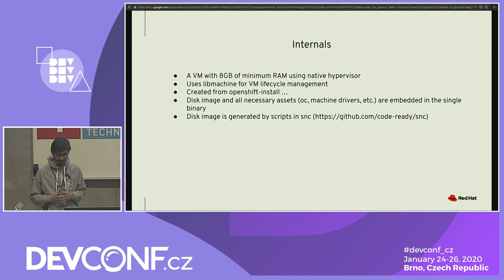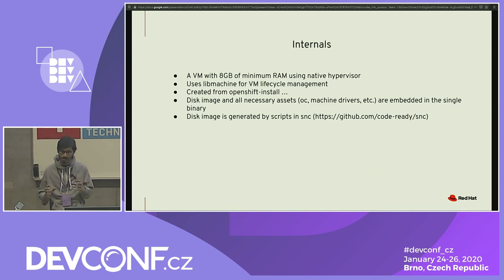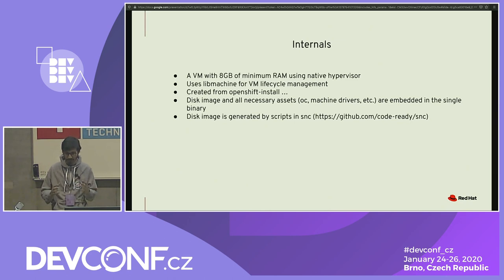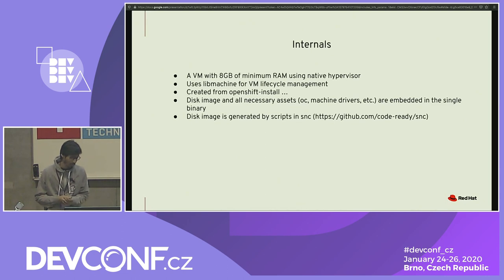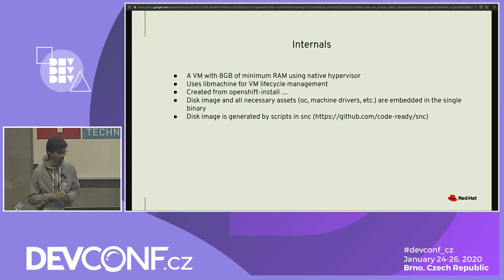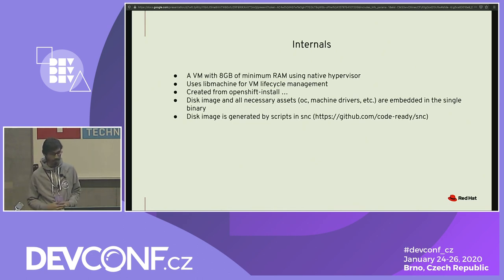CodeReady Containers is basically two things: the disk image, which is the VM image with OpenShift installed in it, and a tool. As a user you don't see that difference — you get one single CLI tool to manage the whole cluster. We put everything in the same binary so you don't have to download multiple things. Download one binary and you're ready to deploy and test your code locally.